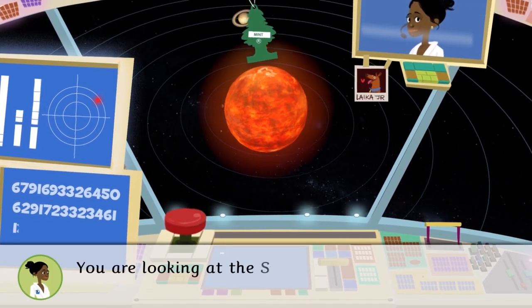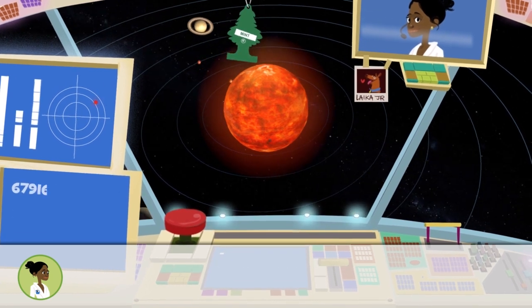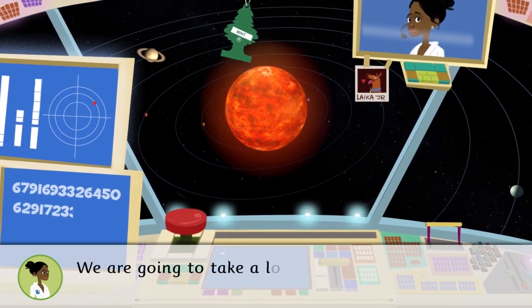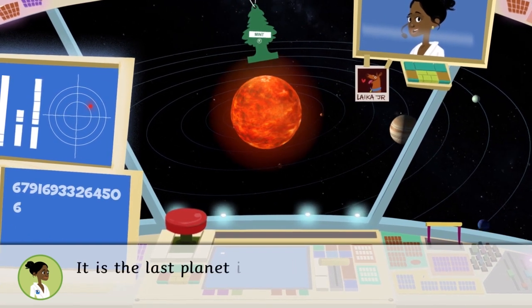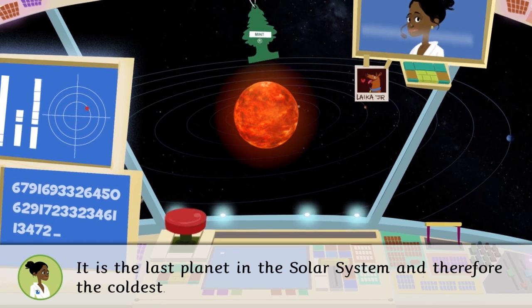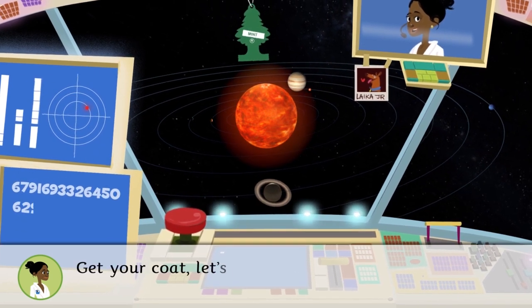You are looking at the solar system. We are going to take a look at Neptune. Do you want to come? It is the last planet in the solar system and therefore the coldest. Get your coat, let's go.